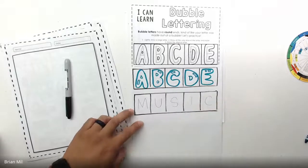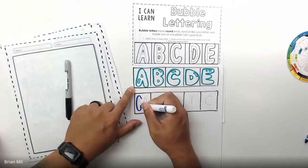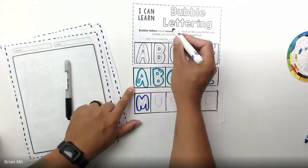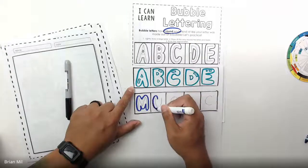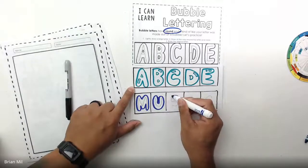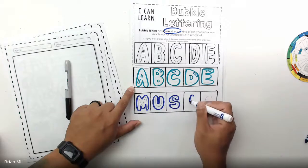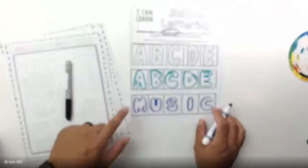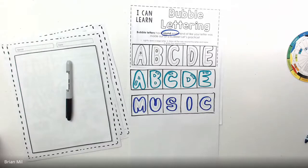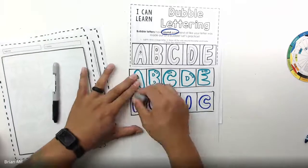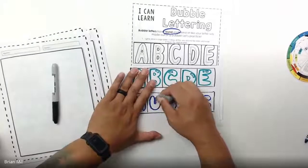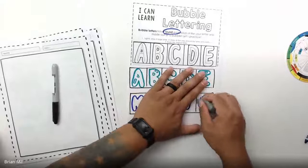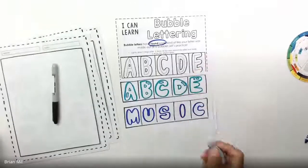I picked the word 'music.' I'm going to outline it using the bubble technique, making sure all the letters have round ends. The cool thing about 'music' is that none of the letters require inside outlining — just the outside. For step three, all I do is erase, and the bubble letters are done. This part of the worksheet is completely finished.